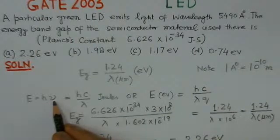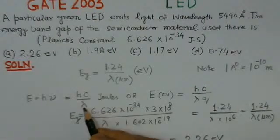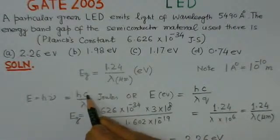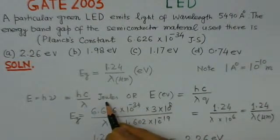Energy and the frequency are related by this relation. Nu we can substitute by c by lambda. So this is hc by lambda, where h is the Planck's constant. This energy comes in joules.